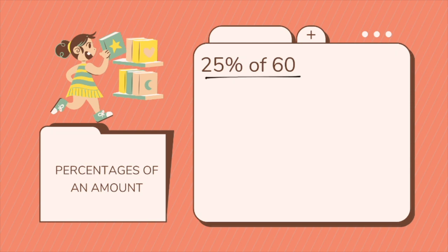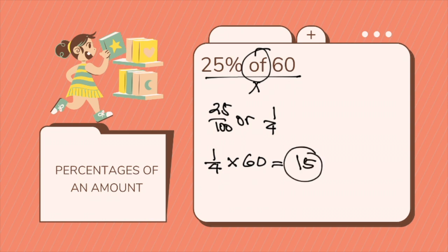So 25% of 60 means 25 over 100, which is 1 over 4. So 1 over 4 times 60 because of the word 'of', which is multiplication. So 60 divided by 4 is 15.